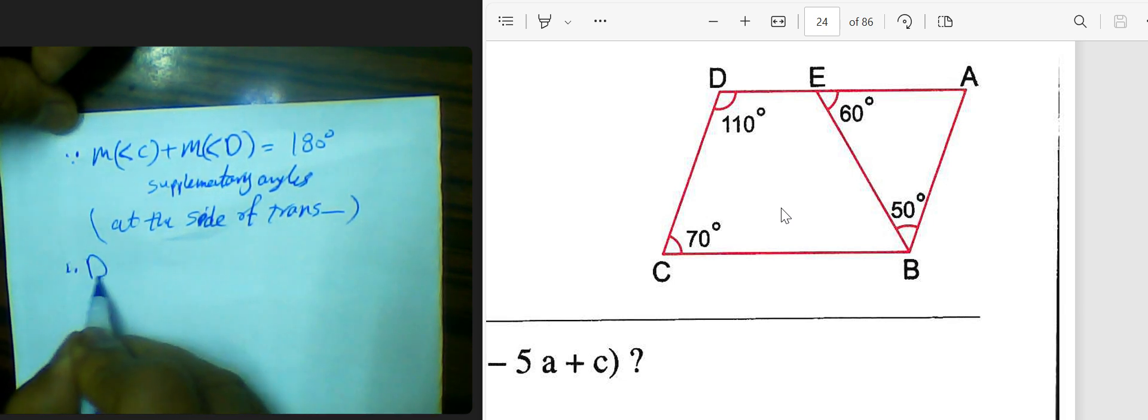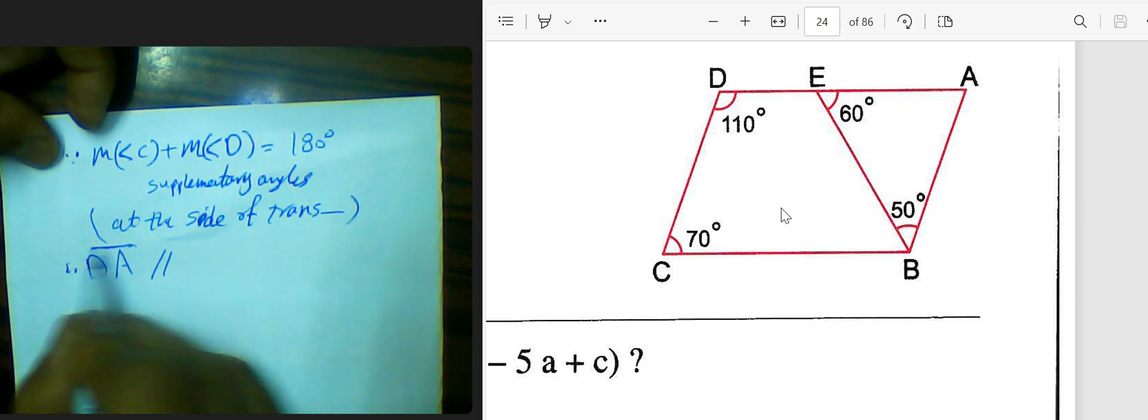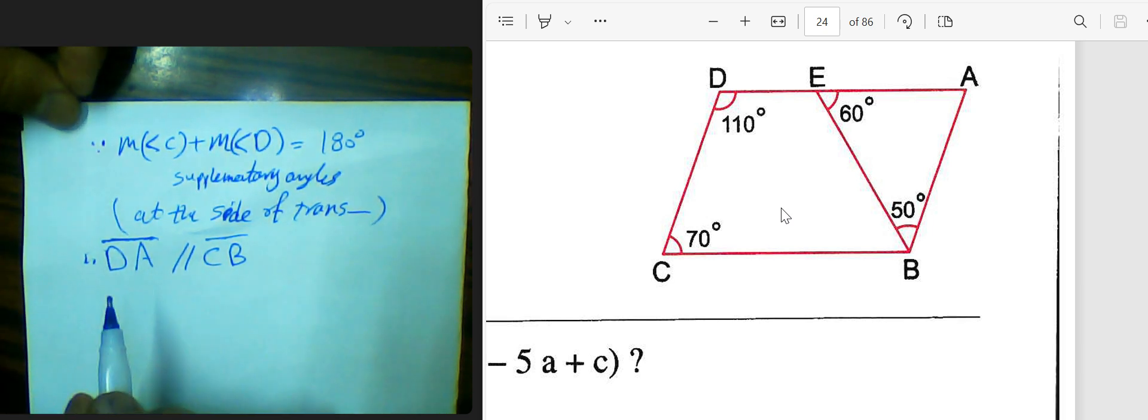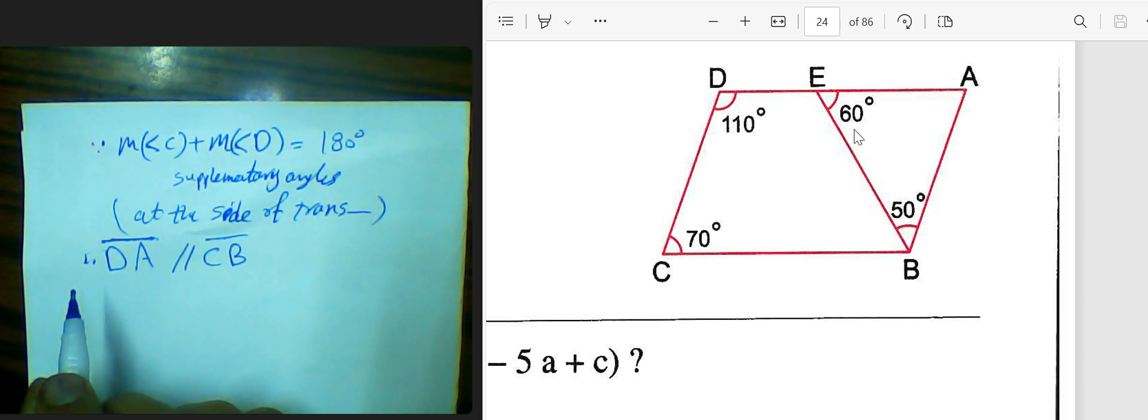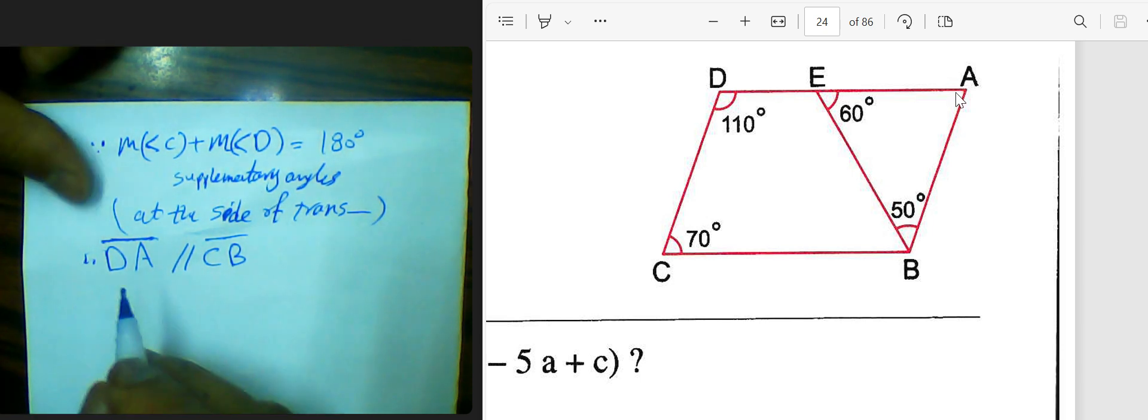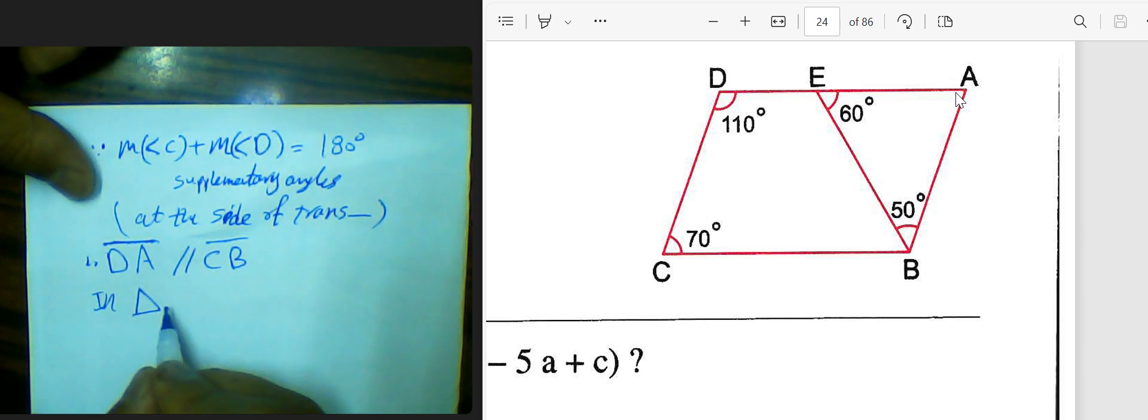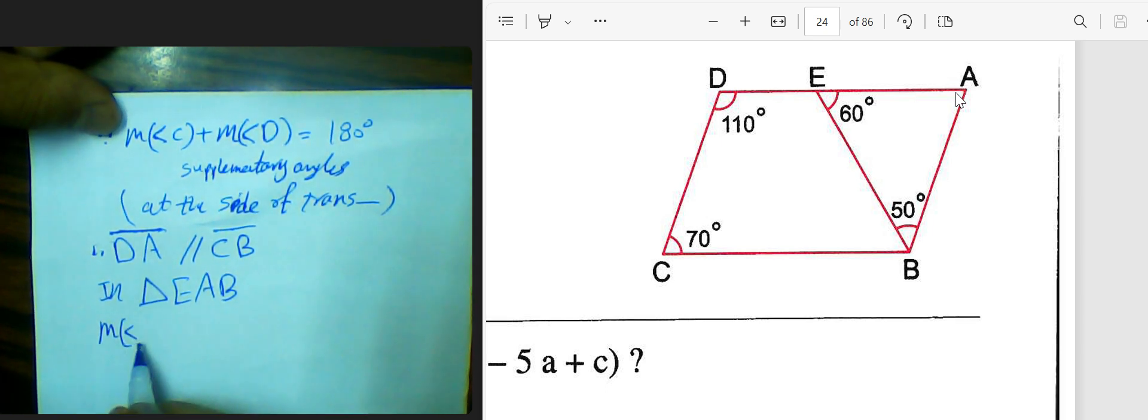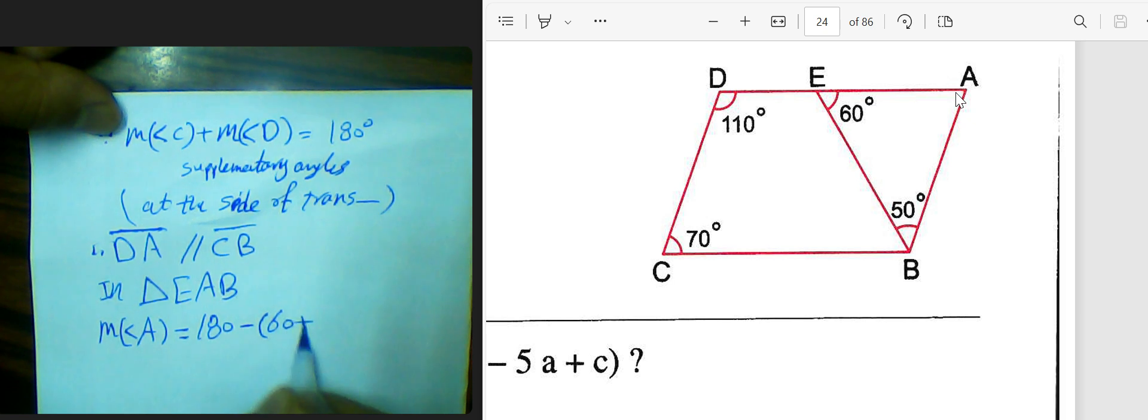What can we show? Angle A from the triangle. If I have angle A plus 50 plus 60, subtract from 180, I'll get measure of angle A. From the triangle, measure of angle A equals 180 subtract by 60, 50 plus 60. 180 subtract by 110. The result is 70 degrees.